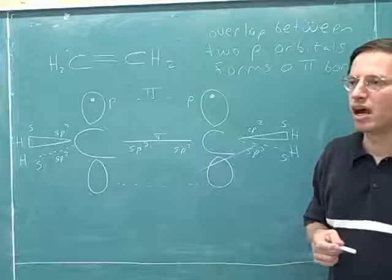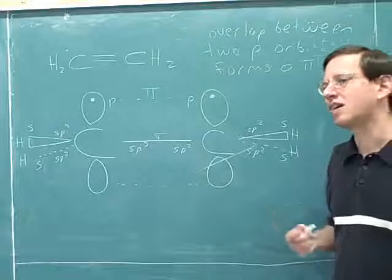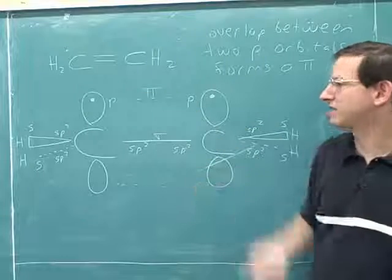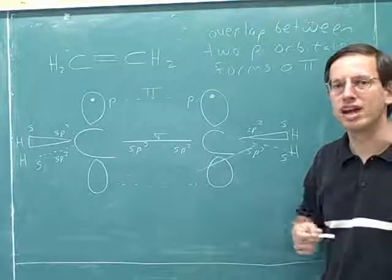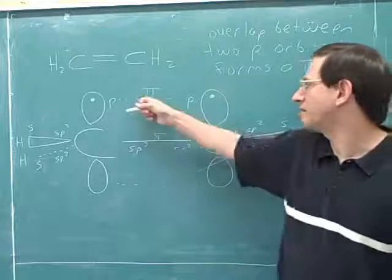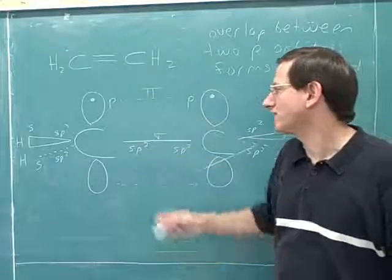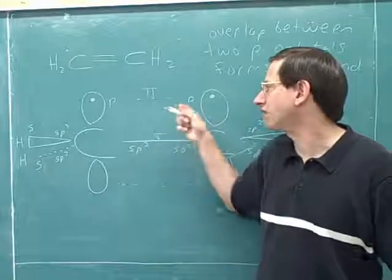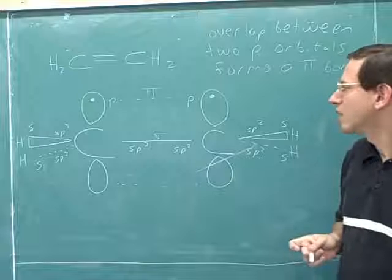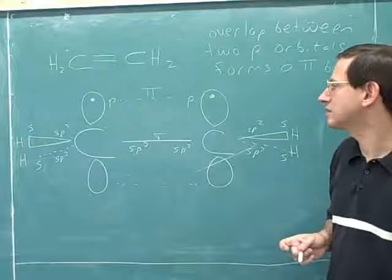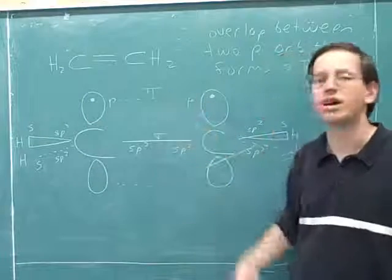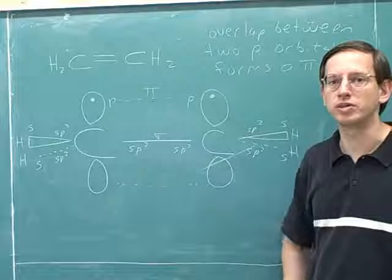Sigma bonds are made out of the overlap of orbitals, and pi bonds are also made out of the overlap of orbitals. In particular, a pi bond is made out of the side-to-side overlap of two p orbitals. We can see this is a pi bond because we have side-to-side overlap of two p orbitals.